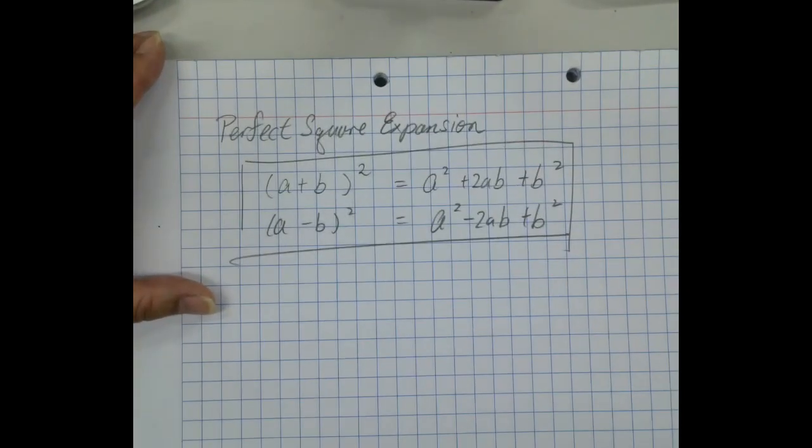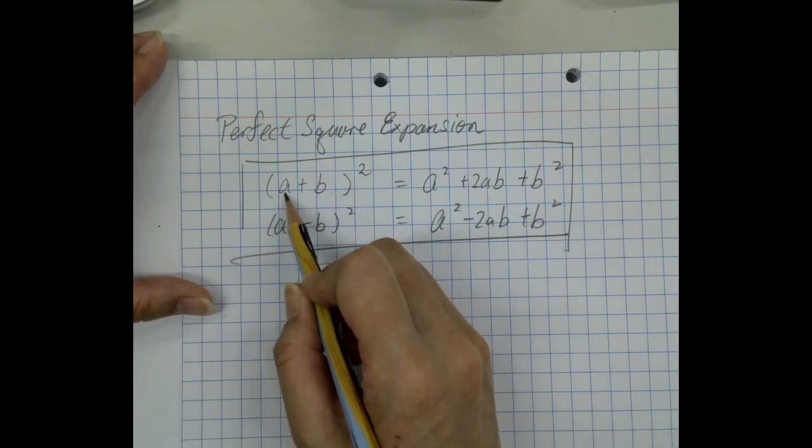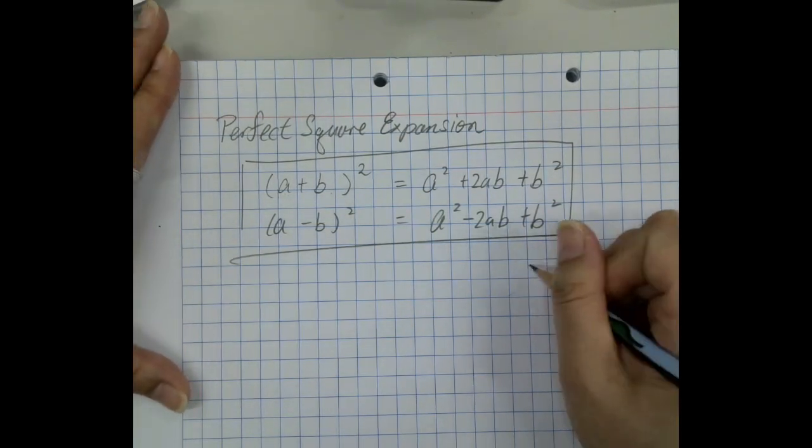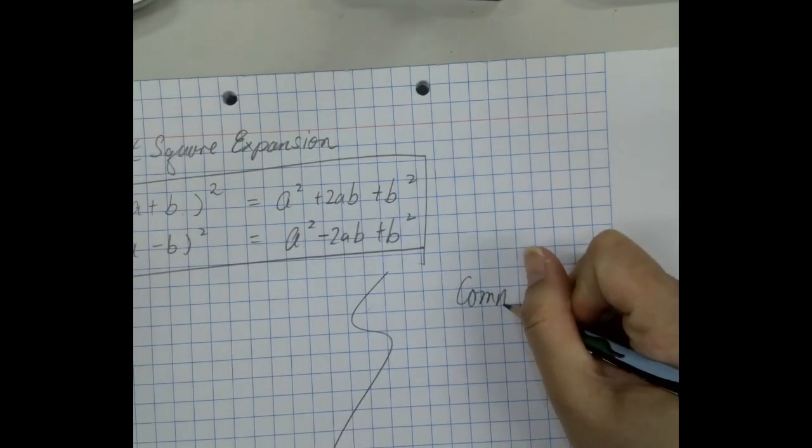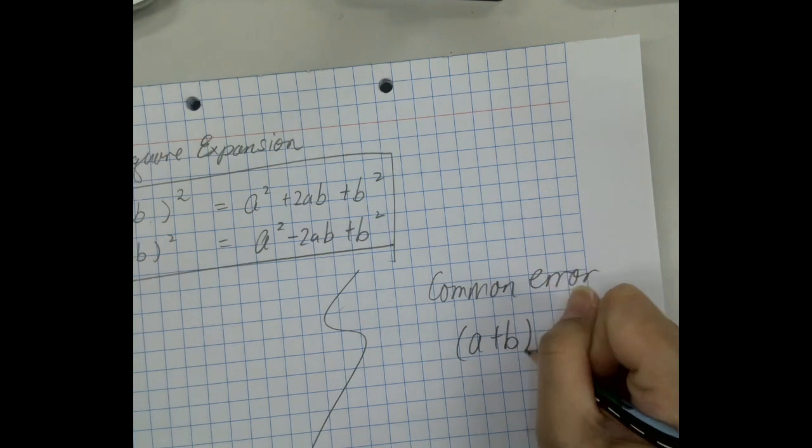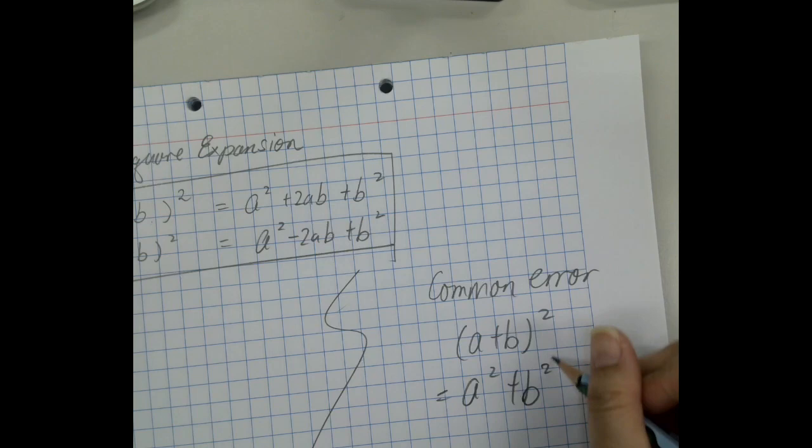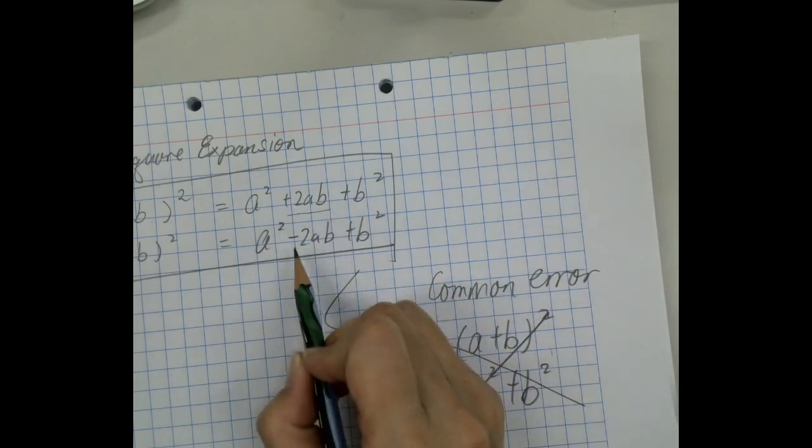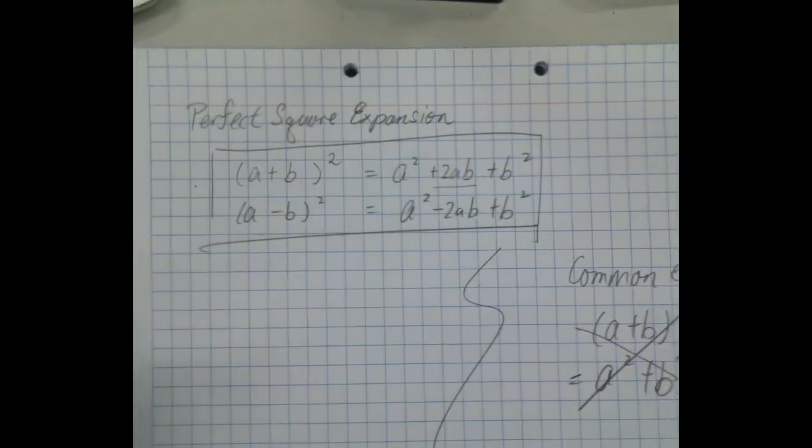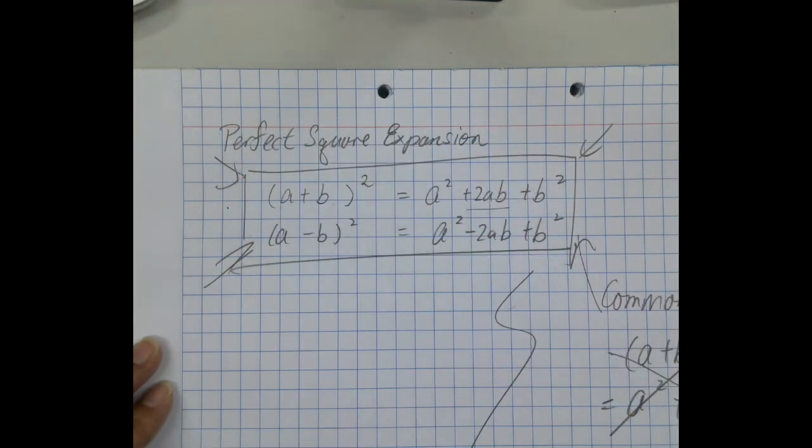So it's pretty straightforward when expanding it because we only require two terms within a bracket or square. A common error which students usually make is (a + b)² becomes a² + b². This is wrong because you missed out one of the terms in there. Don't remember it. Remember this one. We are very happy to remember this one.